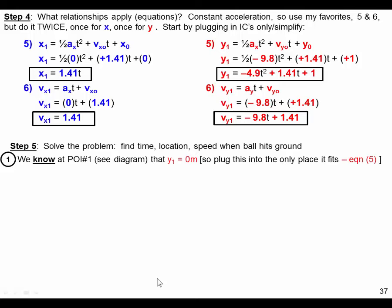So we know for point 1, point of interest 1, we know that at the ground, that's the point at the ground, we know that the height is 0. So there's only one spot that this y equals 0 can fit. It fits right here. There is no other y1 over here. So we're going to plug a 0 into that equation. And here's my equation. I just wrote it down. I substituted my 0 in on the left side because the height is 0.